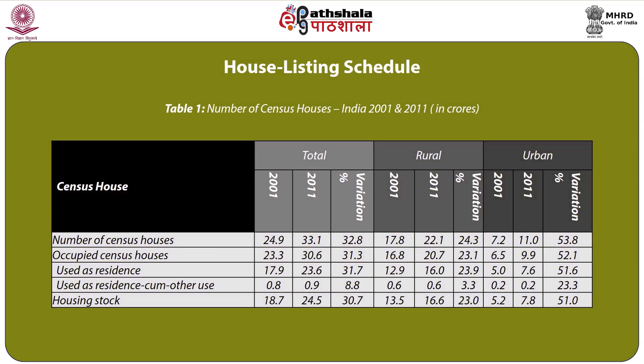Table 1 shows the number of census houses in India for 2001 and 2011 in crores. The categories are number of census houses, occupied census houses, used as residence, used as residence-cum-other use, and housing stock. The number of census houses went up from 24.9 crores to 33.1 crores, a variation of 32.8 percent. Occupied census houses show a variation of 31.3 percent; used as residence 31.7 percent; used as residence-cum-other use 8.8 percent; and overall housing stock shows a variation of 30.7 percent.